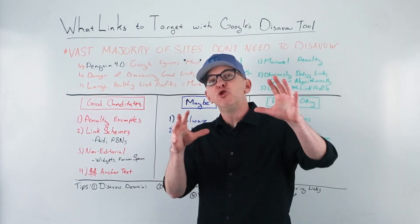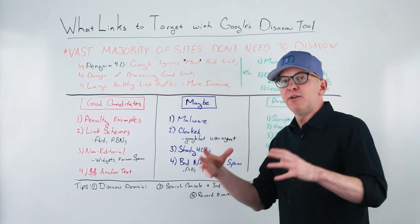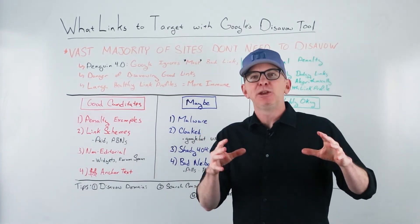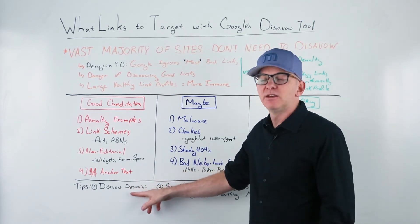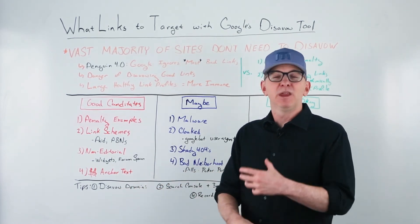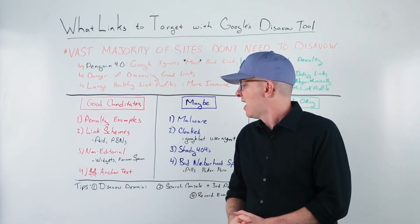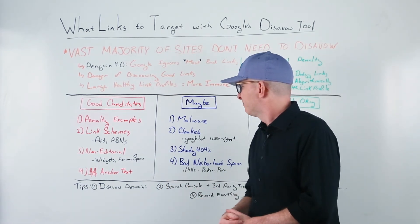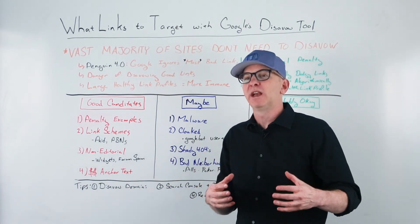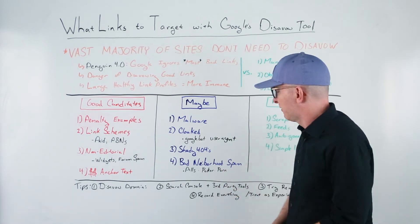A few pro tips when you put your disavow file together: if you find one bad link on a spammy domain, it's usually a good idea to disavow the entire domain, because there's a good chance there are other links there you're just not spotting. Using the domain operator in your disavow file is usually a good idea, unless it's a site like WordPress with a lot of subdomains.